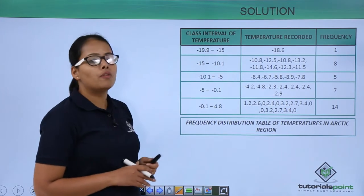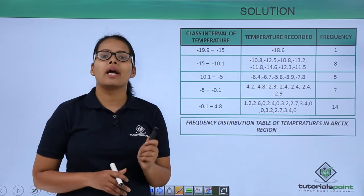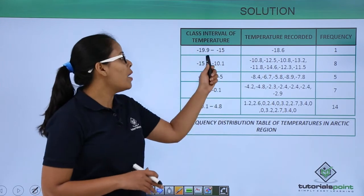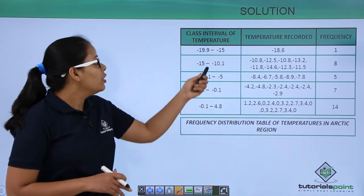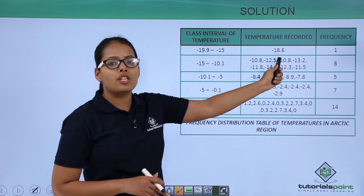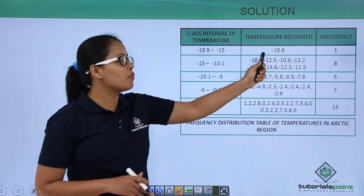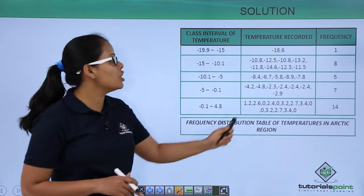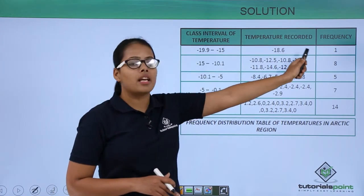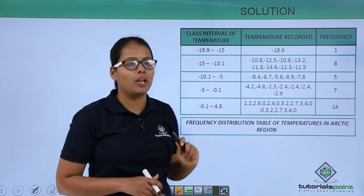For the first interval, which was asked to be taken as -19.9 to -15, there is only one temperature falling under this interval, which is -18.6. That's why the frequency is 1 for this interval.